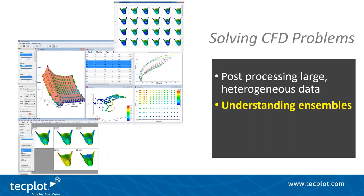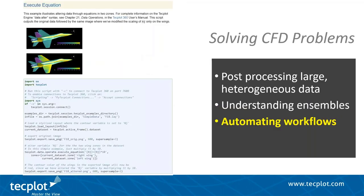TechPlot 360 is also a suite of tools, one of which is TechPlot Chorus, which allows you to analyze ensembles of data. For example, if you're doing design experiments, this tool will help you see the big picture in TechPlot Chorus and then filter down to the details as a companion to TechPlot 360, which helps get you to the answers you need faster. TechPlot 360 also has a built-in macro language and, more recently, a full-featured Python API, which has opened the doors for more advanced automation and post-processing analysis.